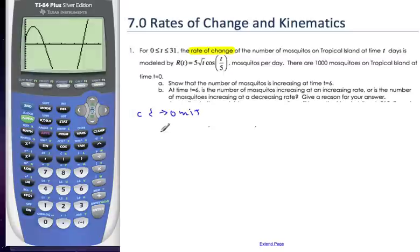I want to know that at r at 6, I want to ask the question, I want to find out if it's positive. If it's positive, then the mosquitoes are increasing.